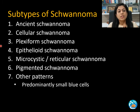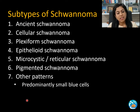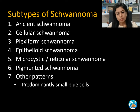The subtypes of schwannomas are: ancient schwannoma, cellular, plexiform, epithelioid, microcystic/reticular, pigmented, and other patterns of which the most common is the small blue cell pattern.